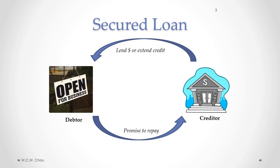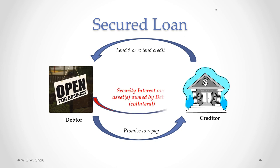We've already looked at the use of guarantees to make a loan safer for a creditor. Another common way of making a loan safer for a creditor is using a secured loan. There would still be money lent from the creditor to the debtor, and the debtor is still making a promise to repay, but in addition to that the debtor is providing a security interest to the creditor over assets owned by the debtor. Those assets are called collateral.